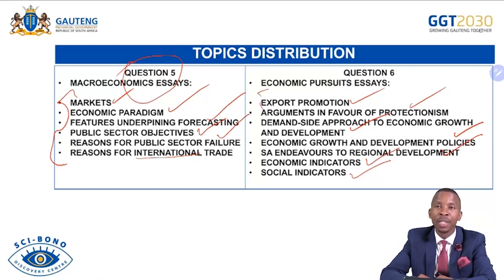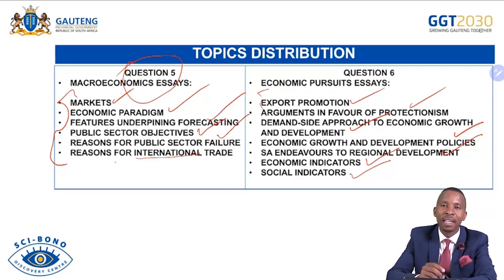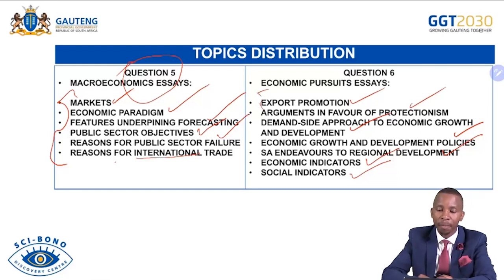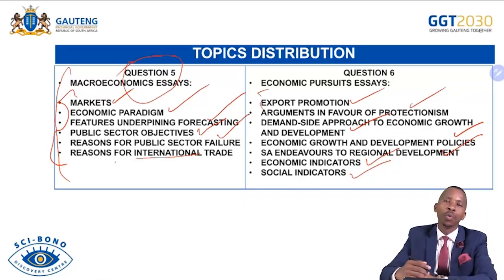You need to know where your strength is when preparing. Some people can do all the macroeconomics essays and all the economic pursuits essays, giving them a huge advantage. If you are struggling, exhaust one topic fully — either all macroeconomics essays or all economic pursuits essays — to expand your opportunities. Knowing all of them means you will cruise through the question paper.